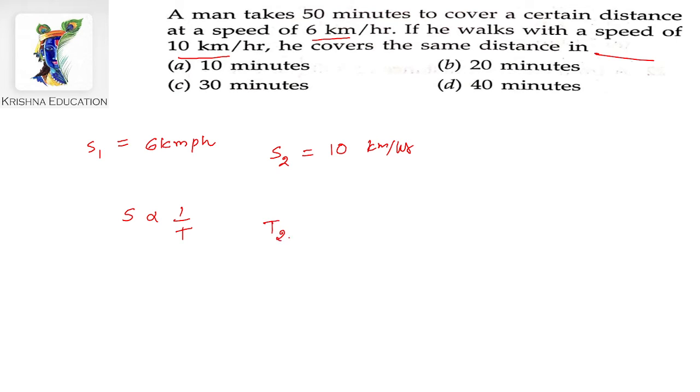So T2 by T1 equals S1 divided by S2. Therefore, T2, the time to cover the distance with walking, is T1 times S1 divided by S2, that is 50 minutes times 6 divided by 10.